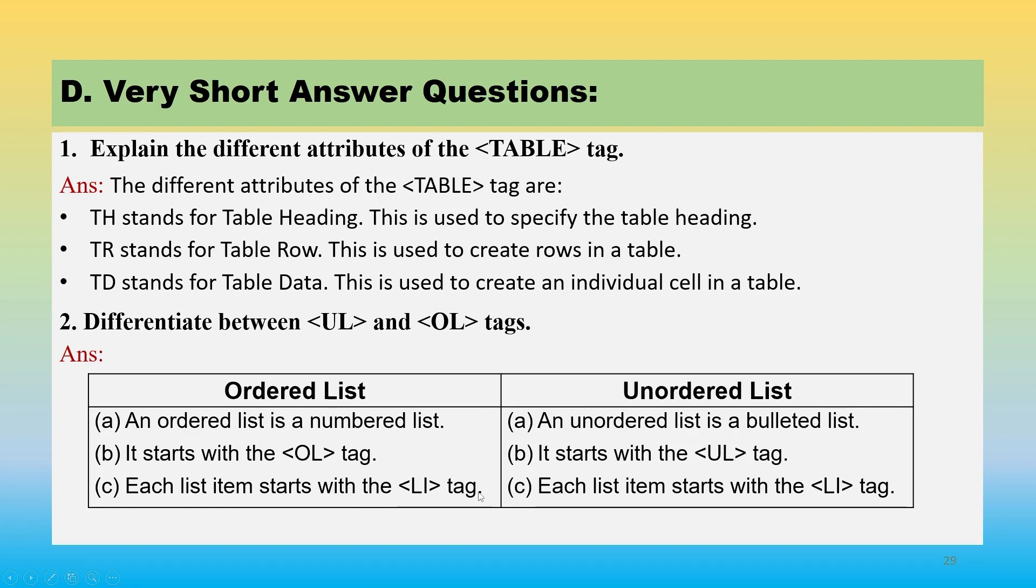Here also in unordered list each item starts with the LI tag. So while writing, you can remove this third item because this is not a difference, this is a similarity.